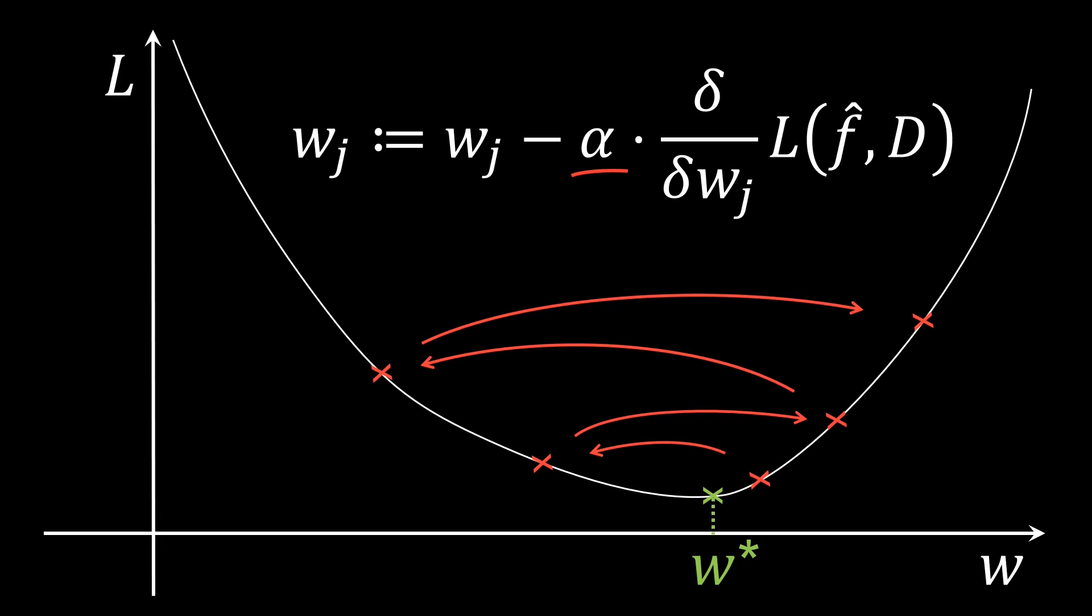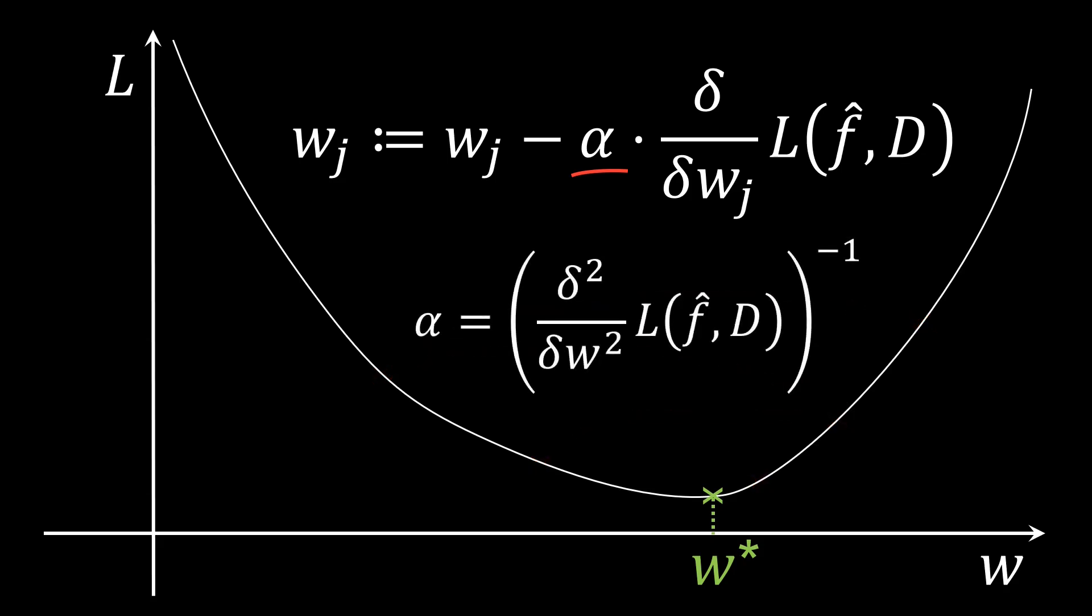One way to go about it is to choose alpha based on the curvature of the loss function. If we take alpha as the inverse of the second derivative, this is known as Newton's method for optimization. However, evaluating the inverse of the second derivative is computationally expensive for large-scale problems.